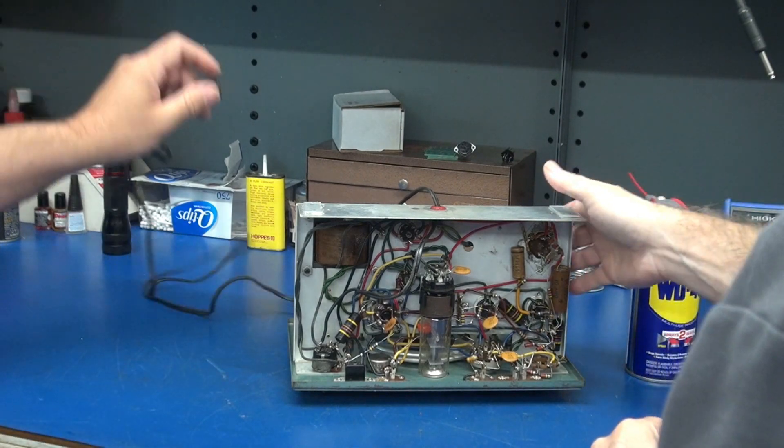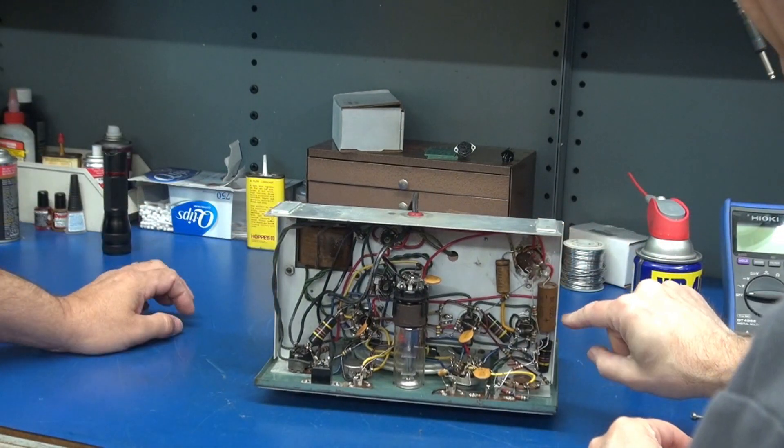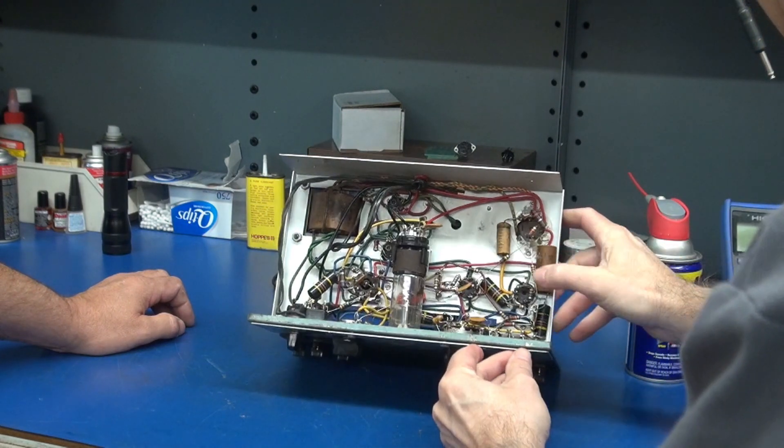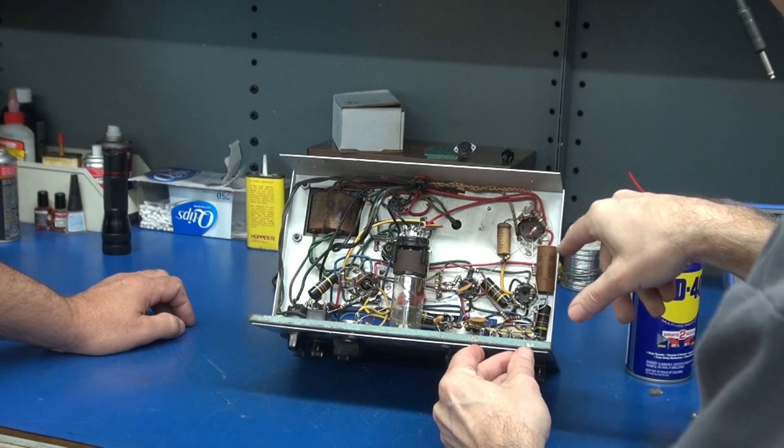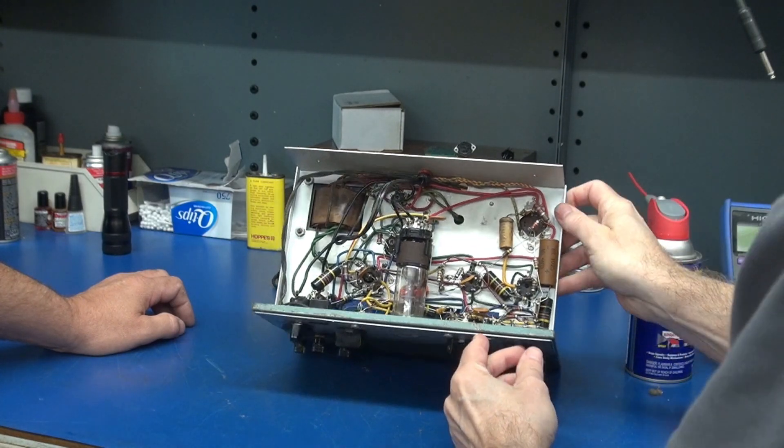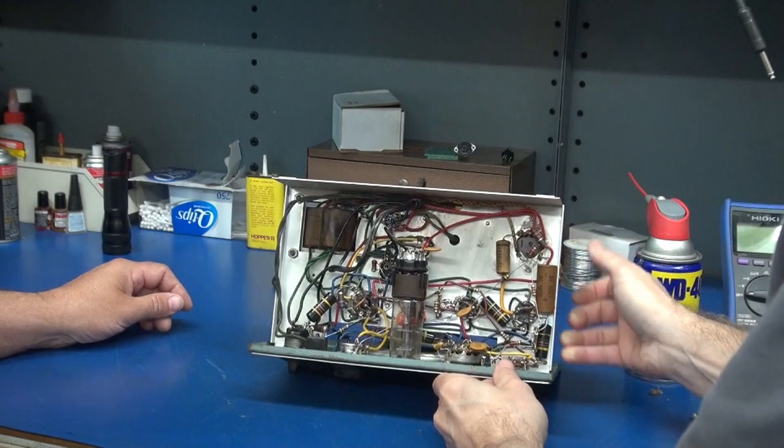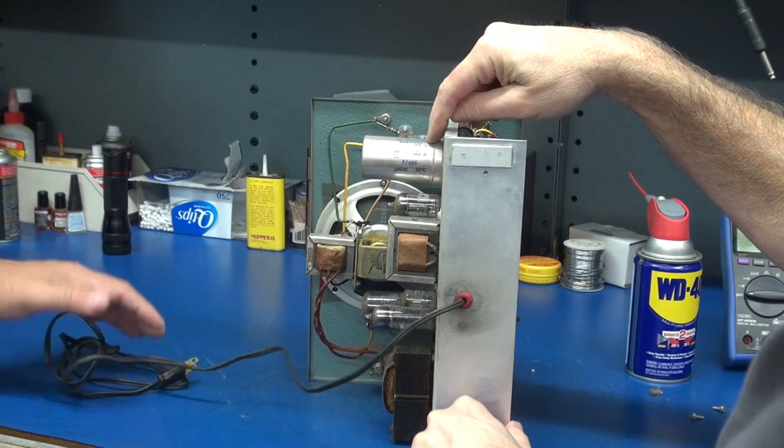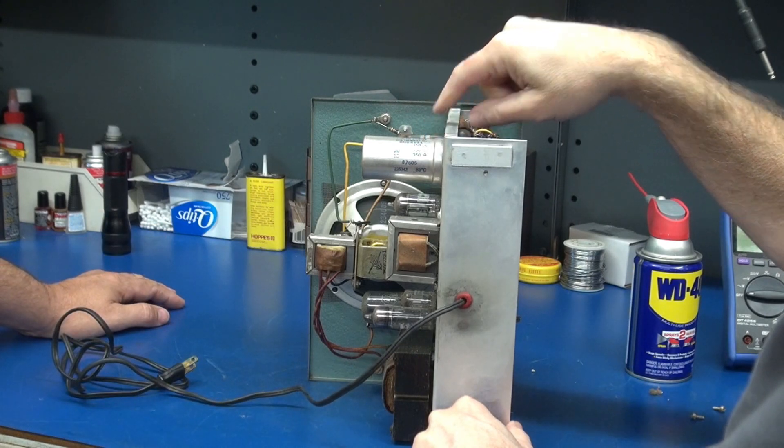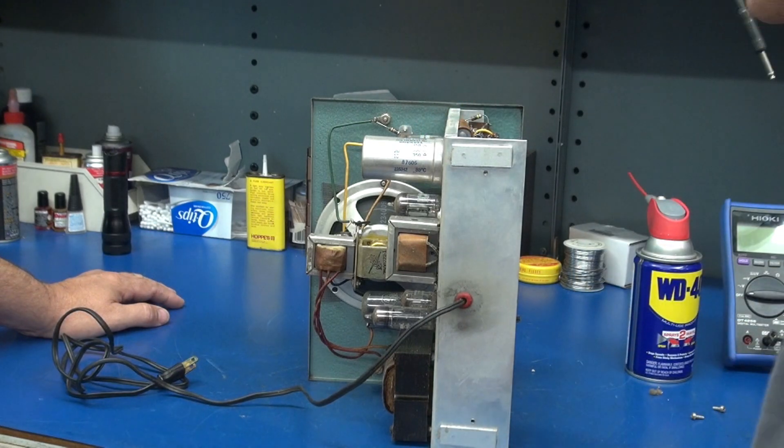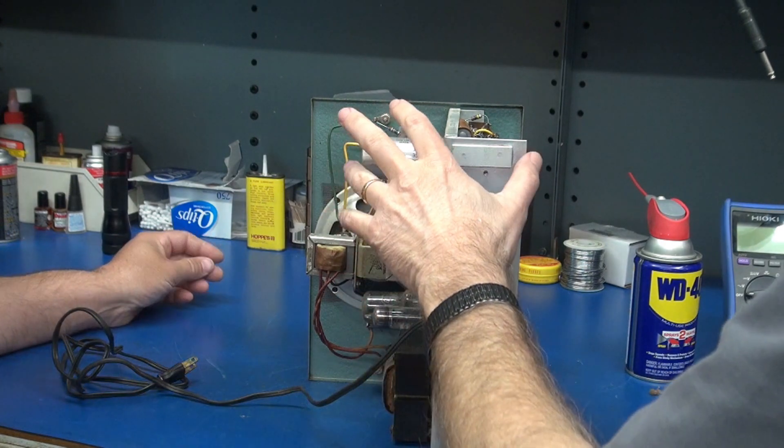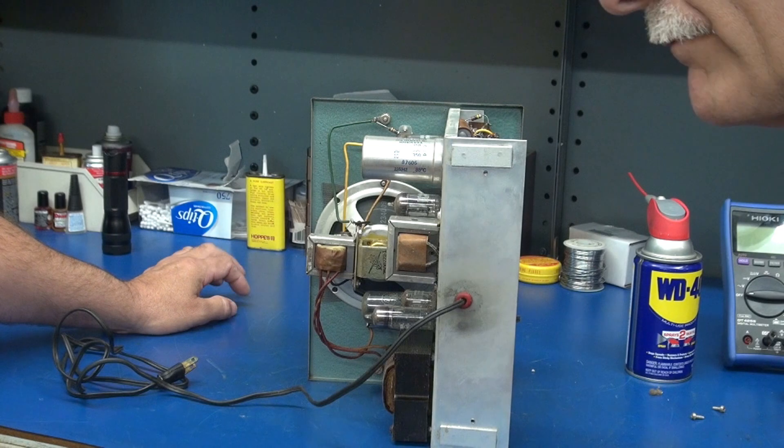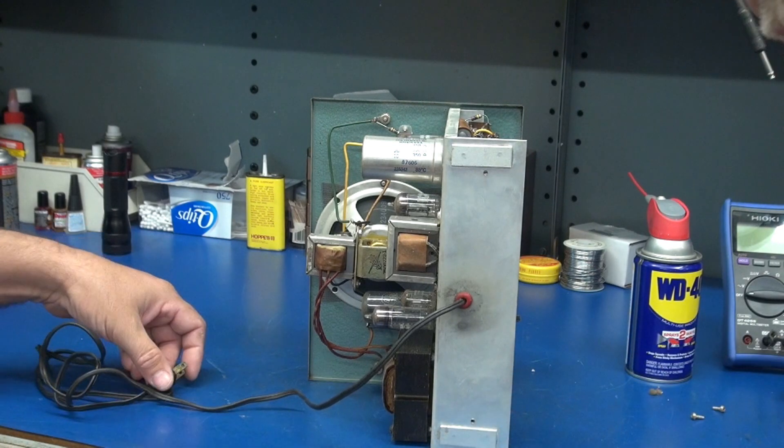So now we need to change out. There's a 10 microfarad cap here. He's an old cruster. Okay. And of course, the main filter cap, which looks like it's a three section cap. And this one is rated 60, 20 and 10, all 350 volts. So we'll see if we can find something that will either replace this or we can put a terminal board and mount it underneath. And then, you know, I feel safe powering up.